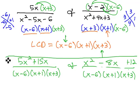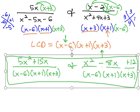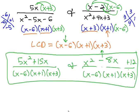And now, we've got two fractions with a common denominator. We get that by identifying the missing factors and multiplying the missing factors.